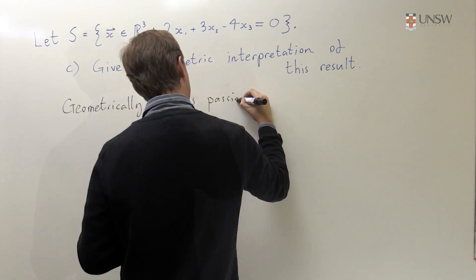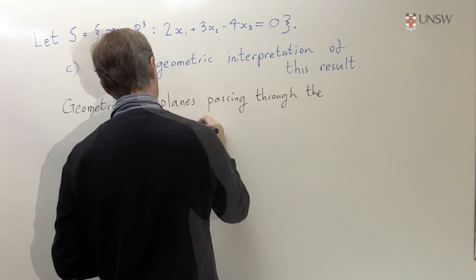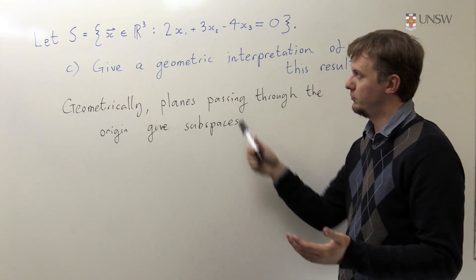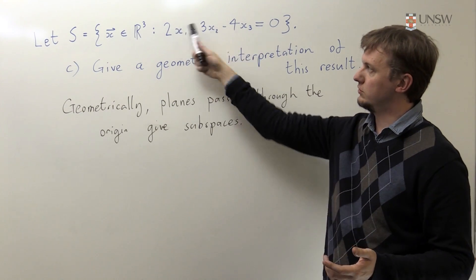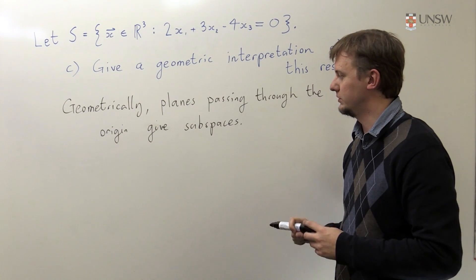Geometrically, planes passing through the origin give subspaces. So there was nothing in my proof that really hinged on what these constants here were, just the fact that this was the equation for a plane and that it passed through the origin.